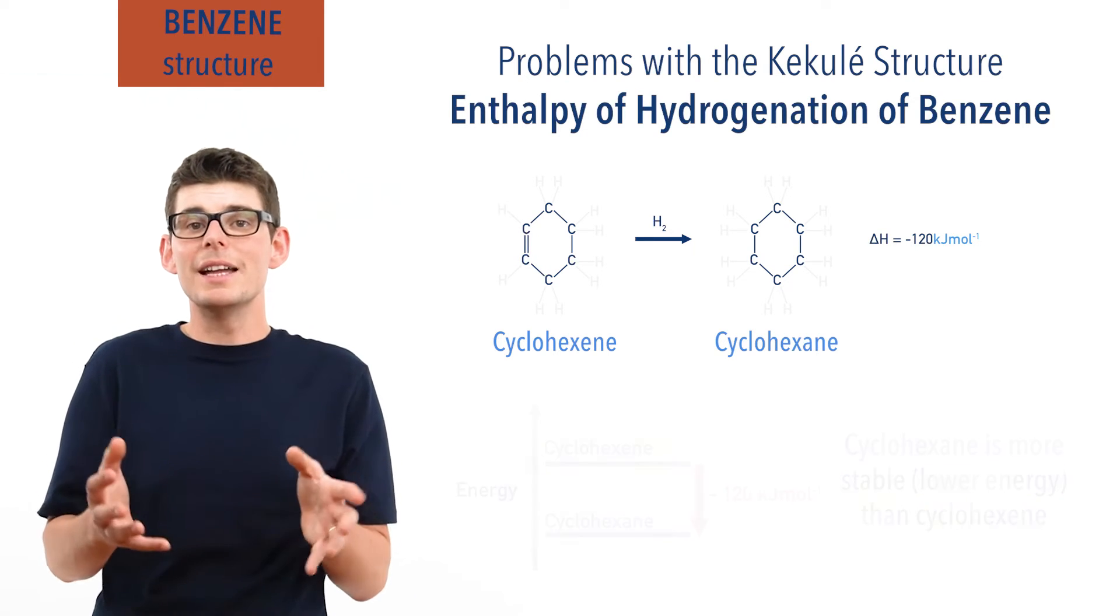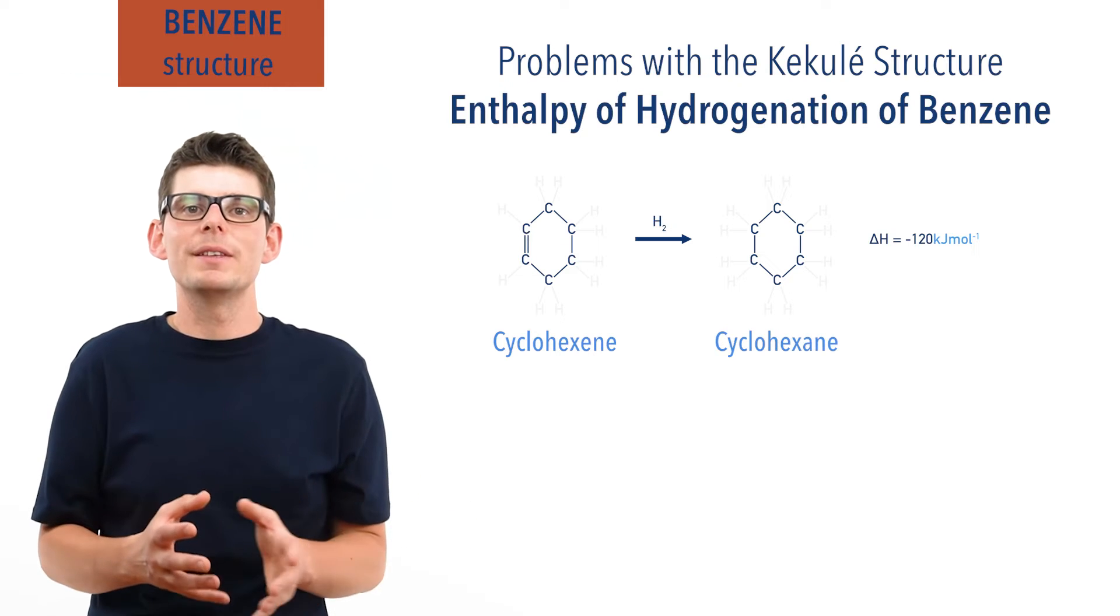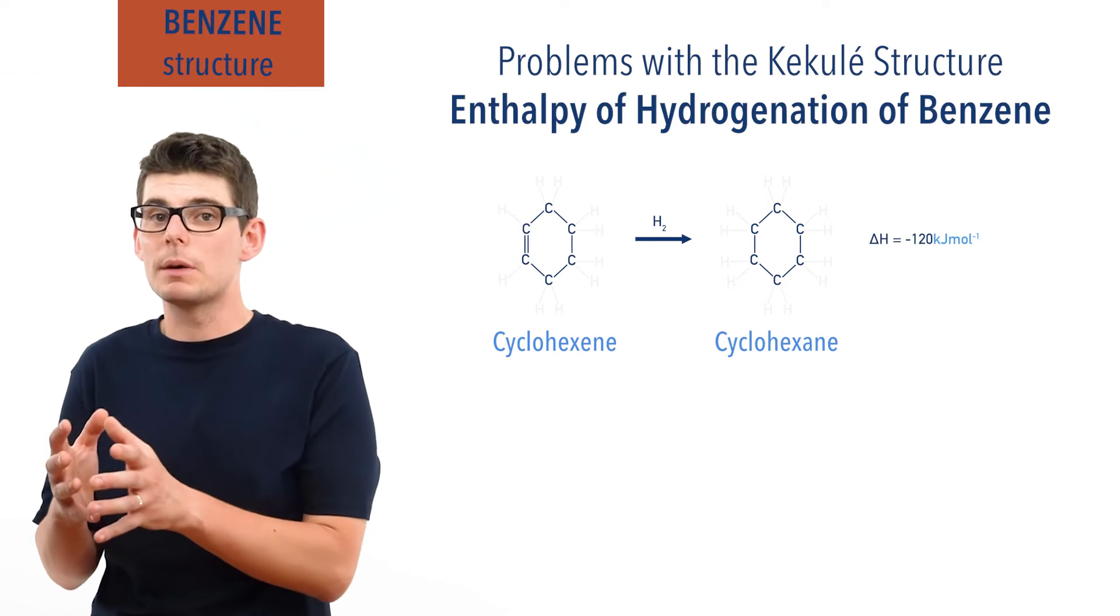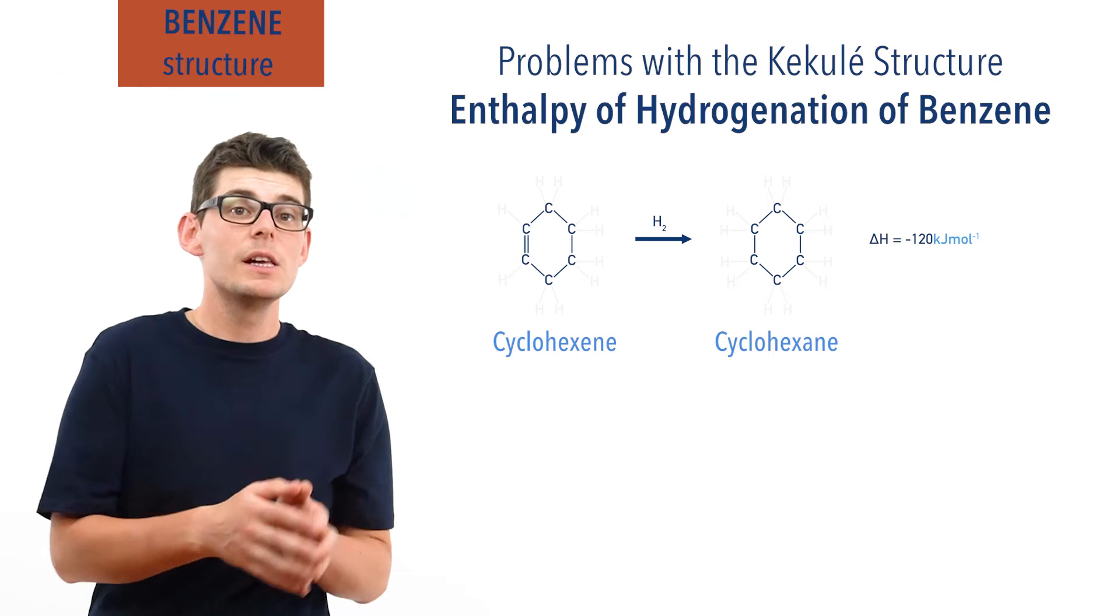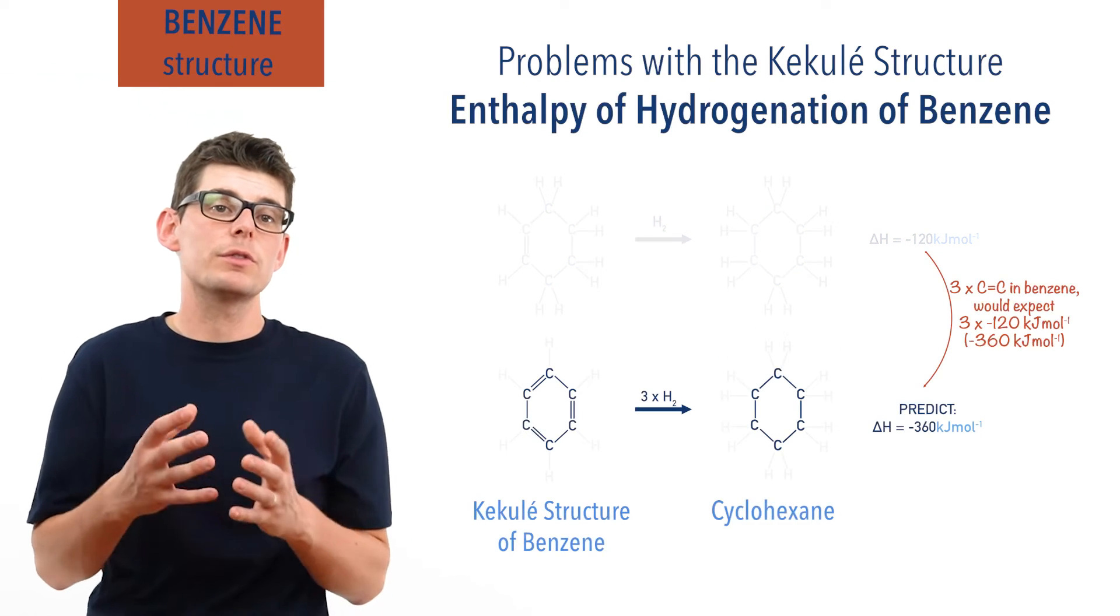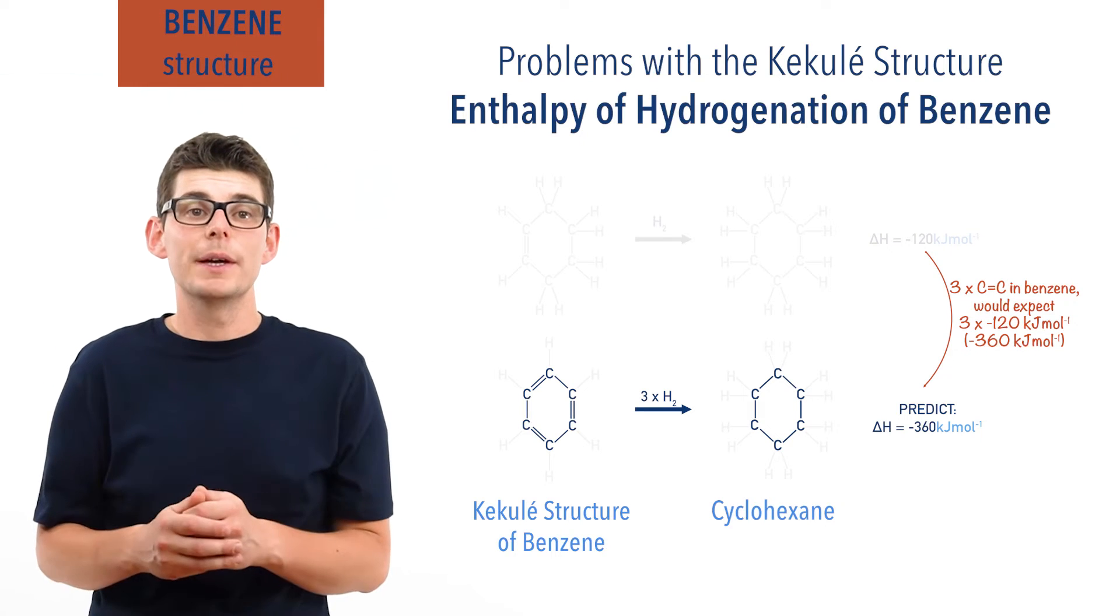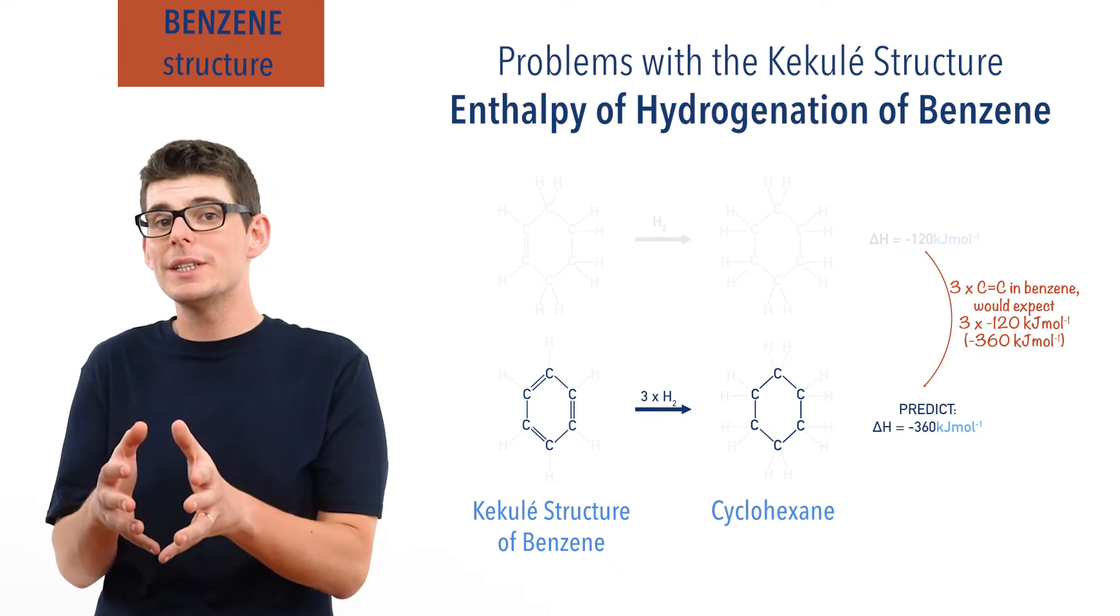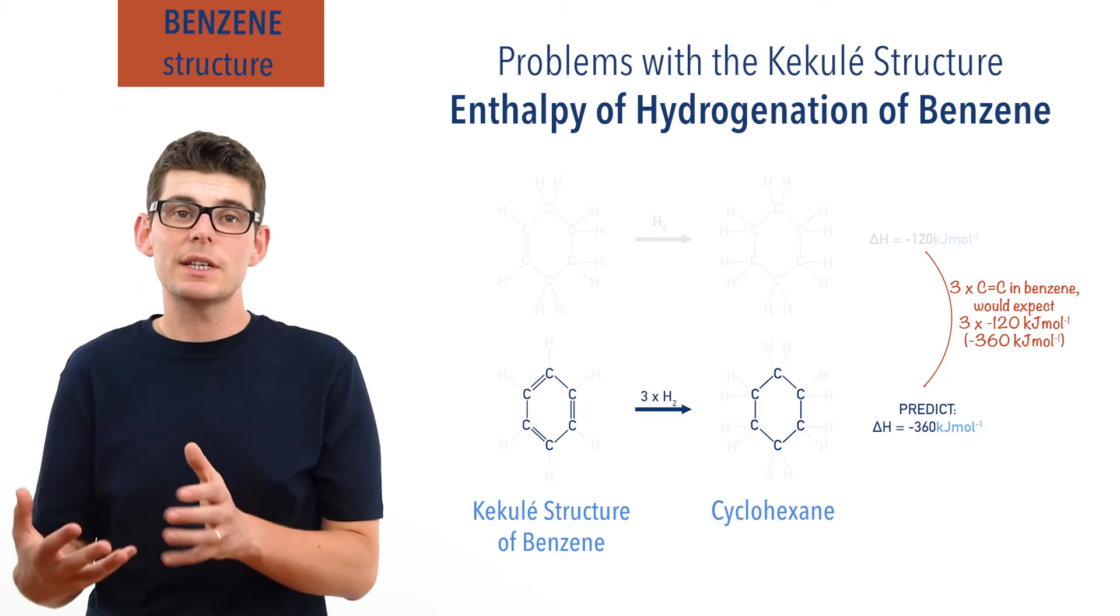It would make sense that, as the Kekulé structure of benzene has three times the number of carbon double bonds as cyclohexene, benzene should have an enthalpy of hydrogenation of minus 360 kilojoules per mole. Or very close anyway, as three times minus 120 equals minus 360.